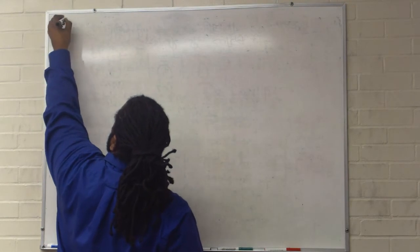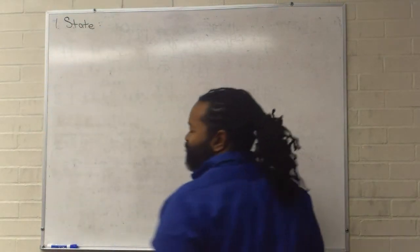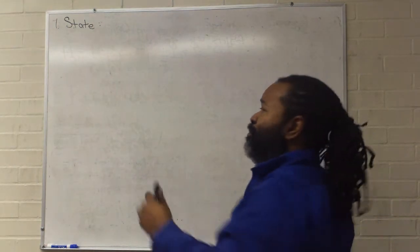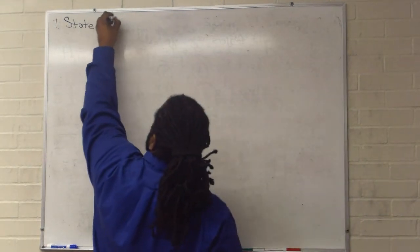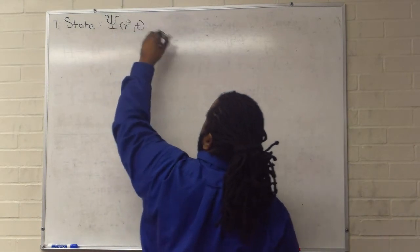The first postulate gives us the state of the system. It simply says that the state of the system can be described by a function, and this wave function has variables of space and time.